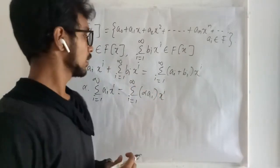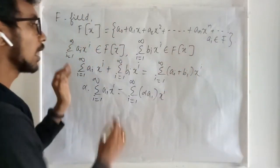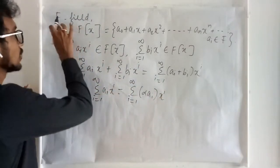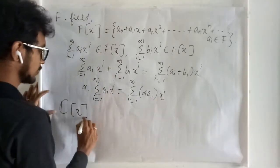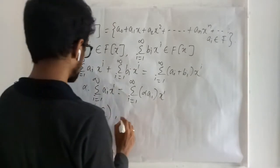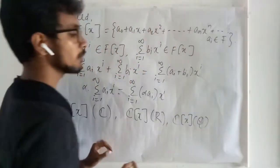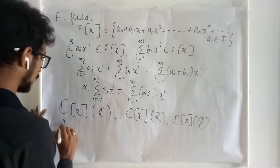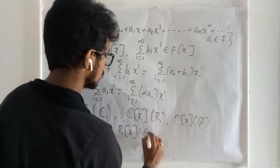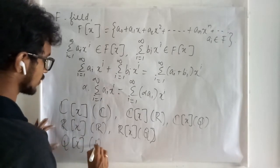Scalar multiplication is defined as: α · (Σ a_i x^i) = Σ (α · a_i) x^i — term-wise multiplication. Whenever you have a field F, you can always define a collection of polynomials of this form, and it forms a vector space. So C[x] forms a vector space over the field of complex numbers and also over reals and rationals. Similarly, polynomials with real coefficients form a vector space over the reals and over the rationals, and polynomials with rational coefficients form a vector space over Q.